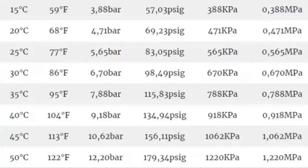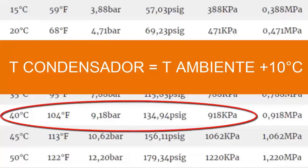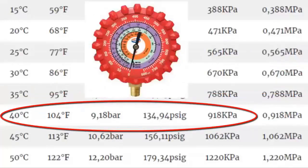2. For an outdoor environment temperature of 30 degrees Celsius, the condenser temperature is usually about 10 degrees Celsius above the environment where the equipment is located. Thus, in the table, for 40 degrees Celsius, about 104 degrees Fahrenheit, the high gauge pressure in the condenser is 9.18 bars, equivalent to 134.94 PSIG or 918 kilopascals.